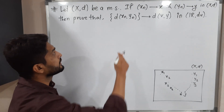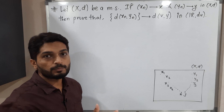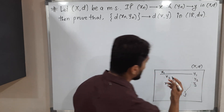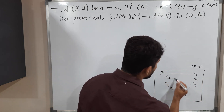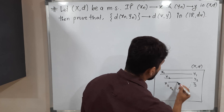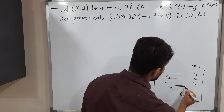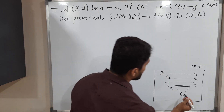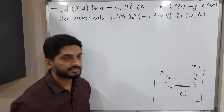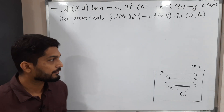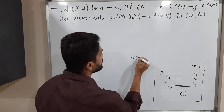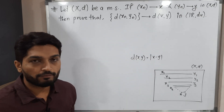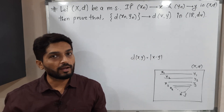We have to prove that the new sequence of distances d(xₙ, yₙ) — whose first term is d(x1,y1), second term is d(x2,y2), third term is d(x3,y3) — converges to d(x,y). We are familiar with the usual metric definition: d(x,y) = |x − y|, and we have to prove this is a convergent sequence.